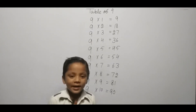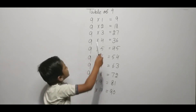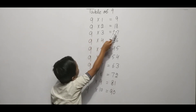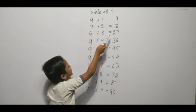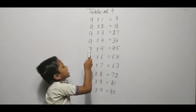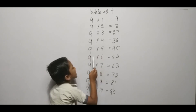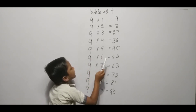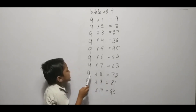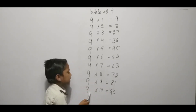Hello friends, we are learning table of nine. Nine one ja nine, nine two ja eighteen, nine three ja twenty-seven, nine four ja thirty-six, nine five ja forty-five, nine six ja fifty-four, nine seven ja sixty-three, nine eight ja seventy-two, nine nine ja eighty-one, nine ten ja ninety.